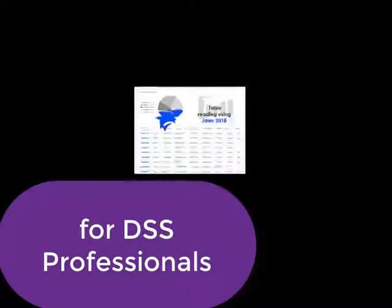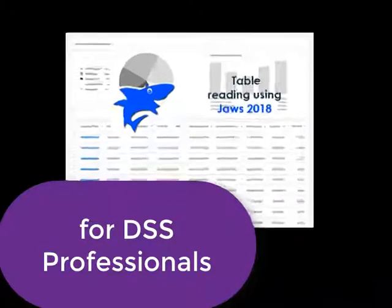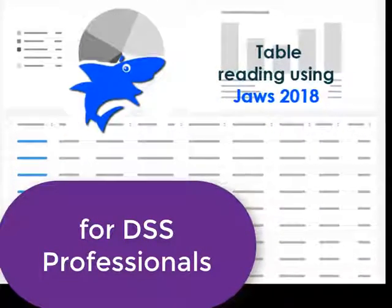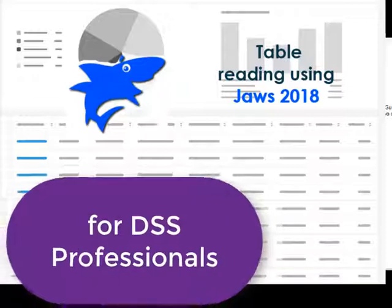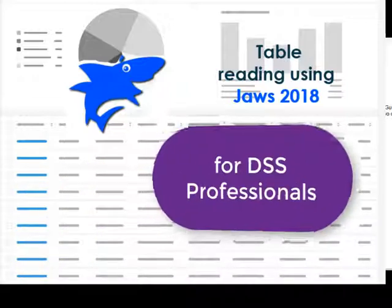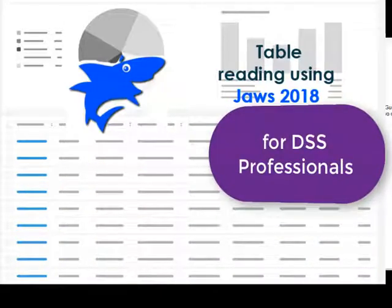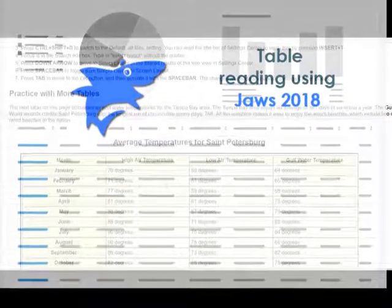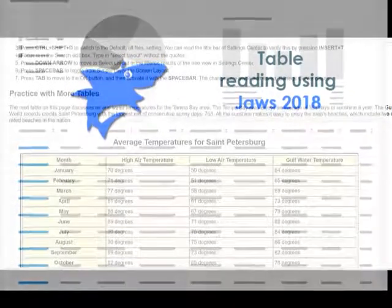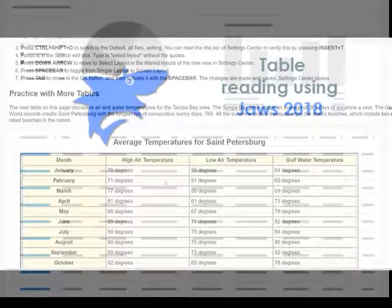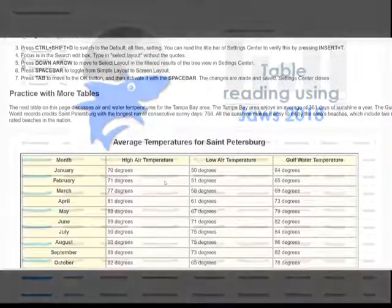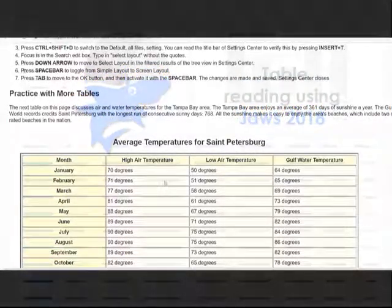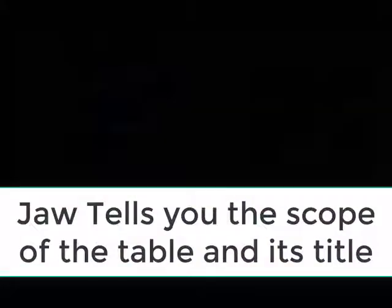Table Reading for Disability Support Service Professionals. As Disability Support Service Specialists, you may need to train people with the use of JAWS. One of the more difficult things to read with JAWS are tables that can be structured differently, so you need to know the basics of navigating within a table so that you can teach others.